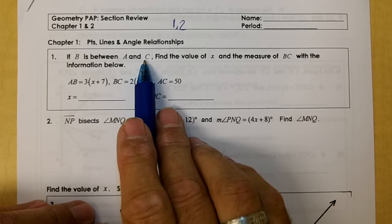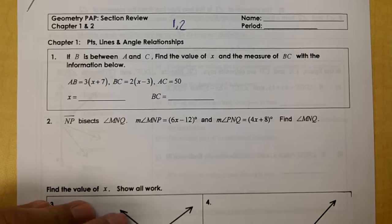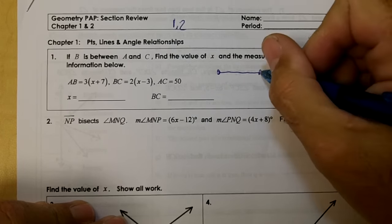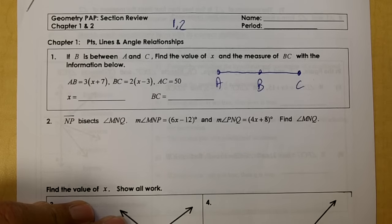If B is between A and C, find the value of X and the measure of BC with the information below. We need to draw a picture. They don't give you a picture, draw it. B is between A and C.